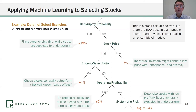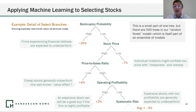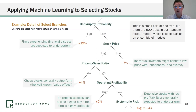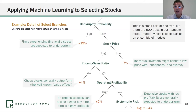But the model understands that just because a stock has a high price-to-sales ratio, it doesn't necessarily mean it's a bad investment. So the next question is: what's the stock's operating profitability? It's important to note the machine figured this out on its own. A profitable company is very good at turning sales into profits.